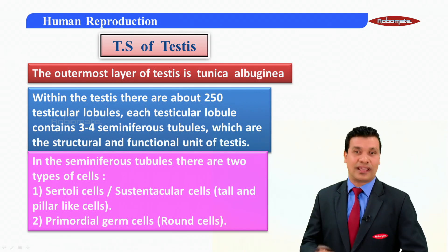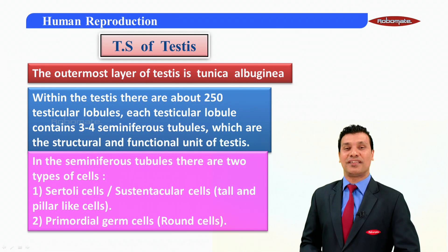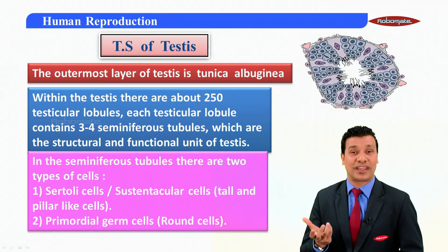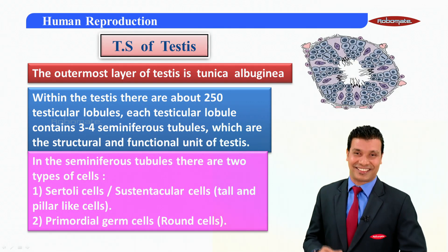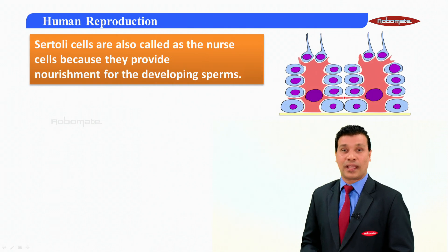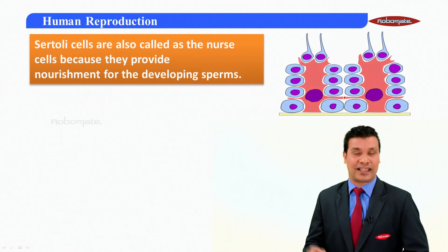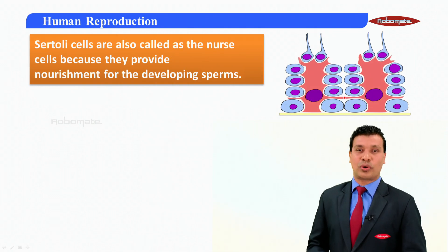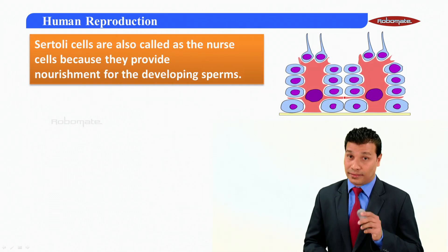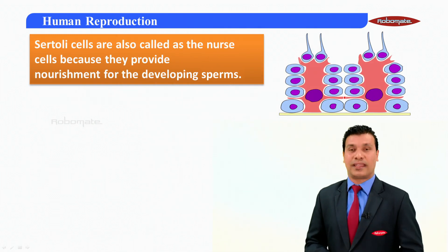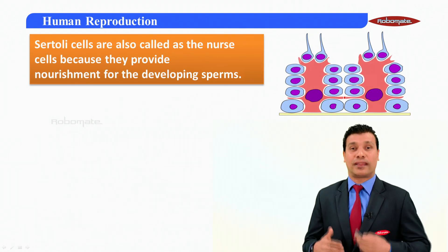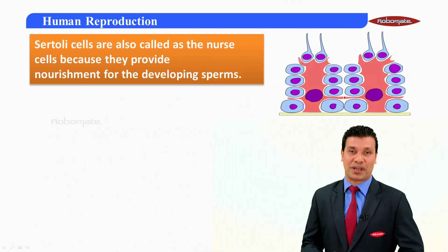The second type is the primordial germ cells, which are the rounded cells. The Sertoli cells are also called the nurse cells, because they provide nourishment for the developing sperms.